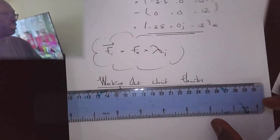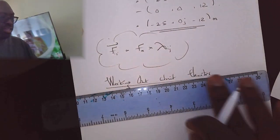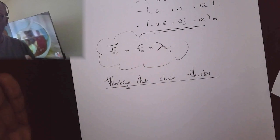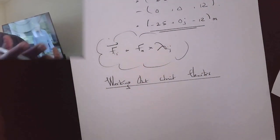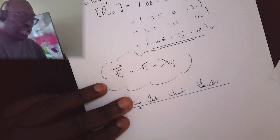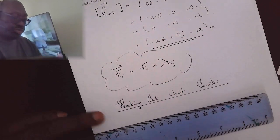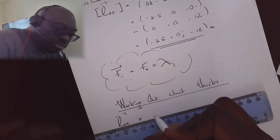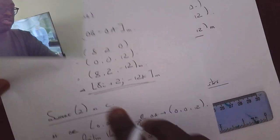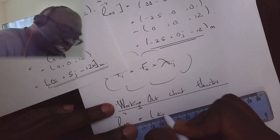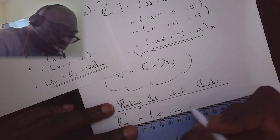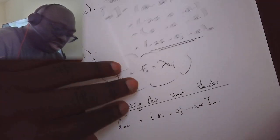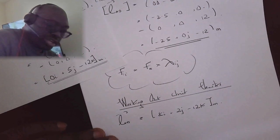One important thing to point out: once you've worked out the unit vector, double check that its magnitude gives you unity. If it doesn't give you unity, then you've gone wrong somewhere. We're going to work out the unit vector for position vector AB, which we worked out to be 8i plus 2j minus 12k metres.